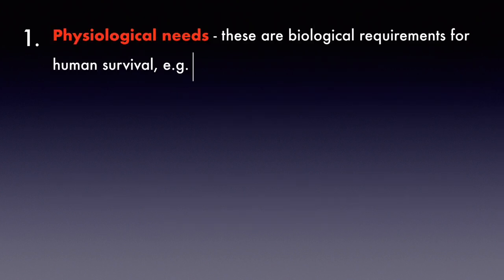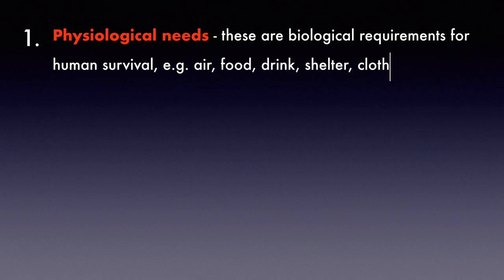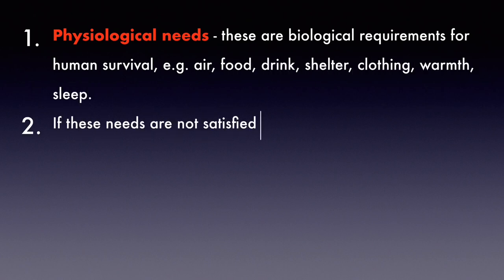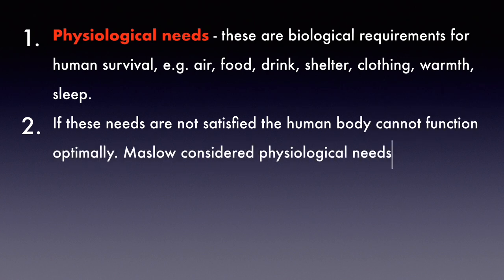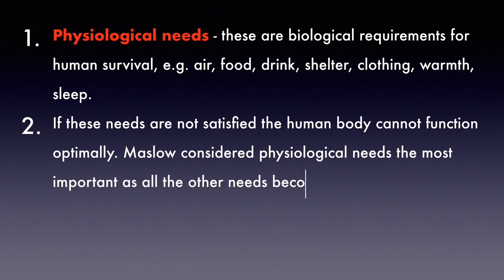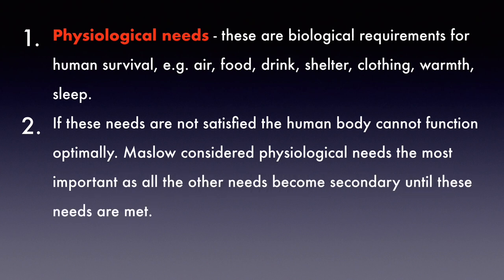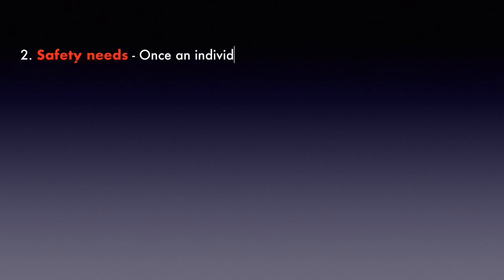Let's talk about all the needs in detail. First, physiological needs — these are biological requirements for human survival, like air, food, drink, shelter, clothing, warmth, and sleep. If these needs are not satisfied, human beings cannot function. Maslow considers physiological needs the most important, as all other needs become secondary until these are fulfilled.